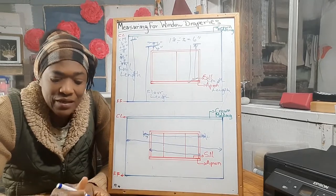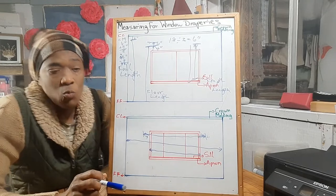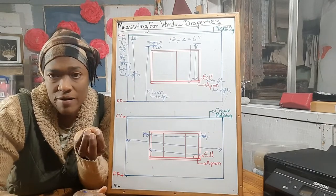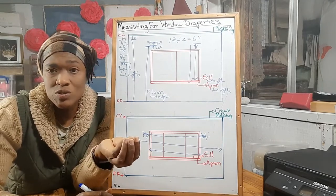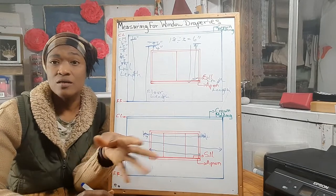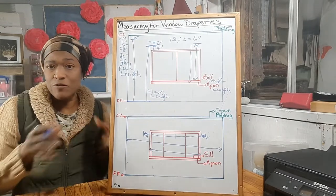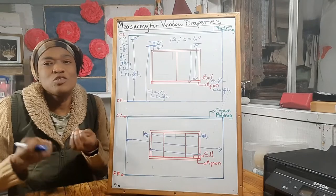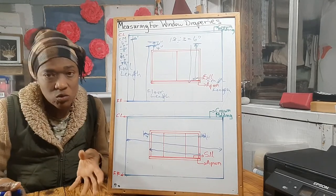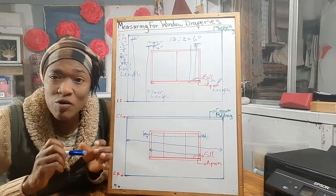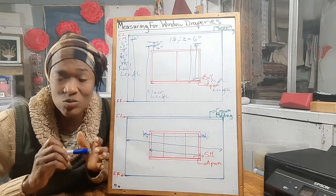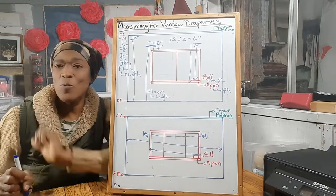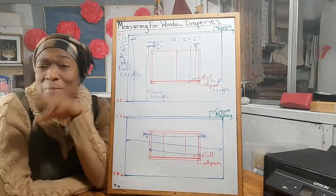It is always advisable that when you are doing any measurements — whether for width or length — that you have your hardware and curtain rods ready, because that will also affect your measurement. It's like choosing paint color first and then trying to find furnishings to match. The best thing is to have your curtain rods and hardware at hand, and even better to have them installed before you measure so you get precise measurements.